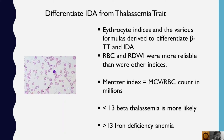Let's see how we can differentiate iron-deficiency anemia from thalassemia trait. Erythrocyte indices and the various formulas derived are used to differentiate beta-thalassemia trait and iron-deficiency anemia. RBC count and RDW index were more reliable than were other indices.